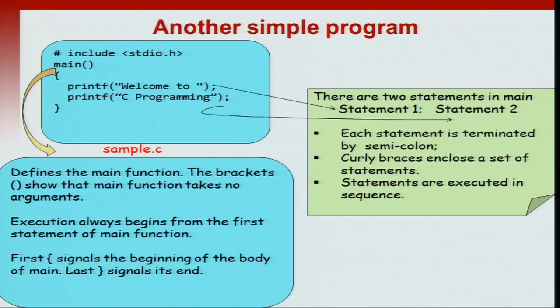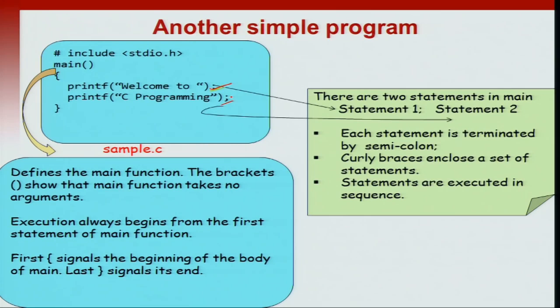This particular main function has two statements; earlier we had just one statement. Each statement, as I said before, is terminated with a semicolon. The first semicolon says that the statement printf 'welcome to' ends at that point, followed by the second statement, which is also terminated by a semicolon. Every statement in C is terminated with a semicolon. Curly braces enclose a set of statements, and each statement in a sequence is executed in the exact sequence that we wrote in the code.